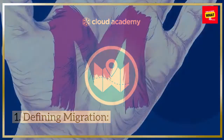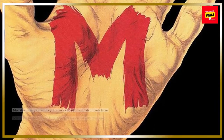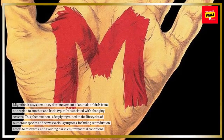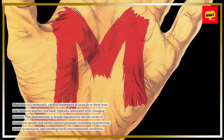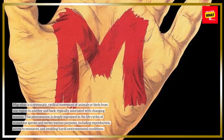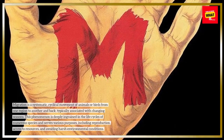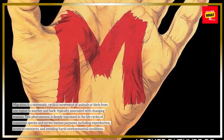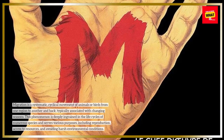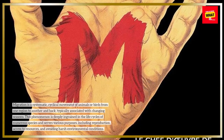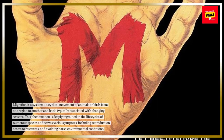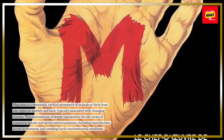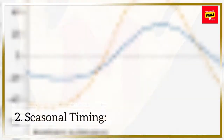Defining Migration. Migration is a systematic, cyclical movement of animals or birds from one region to another and back, typically associated with changing seasons. This phenomenon is deeply ingrained in the life cycles of numerous species and serves various purposes, including reproduction, access to resources, and avoiding harsh environmental conditions.